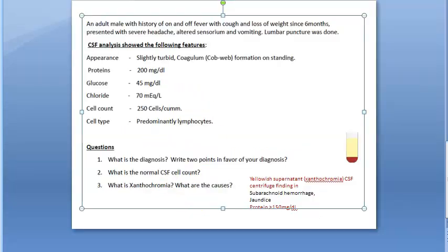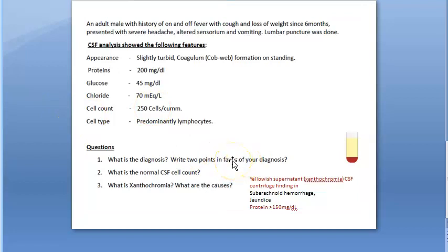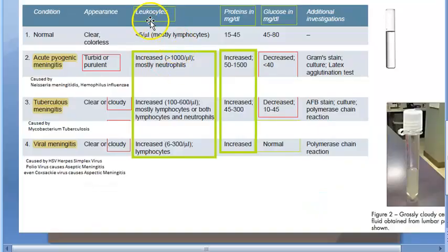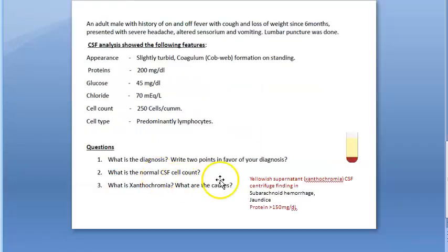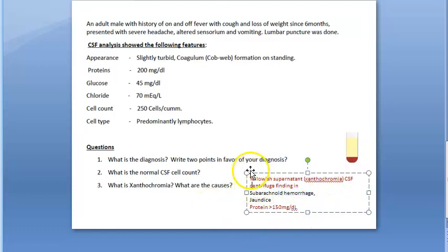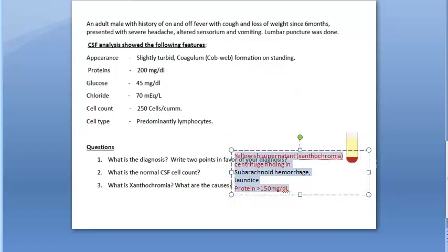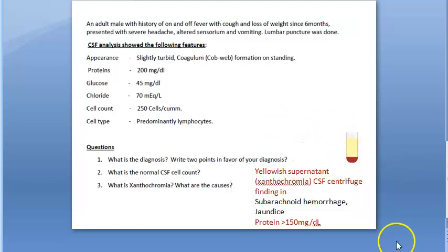To summarize: the diagnosis is tuberculosis meningitis, caused by Mycobacterium tuberculosis. Two points in favor are predominantly lymphocytes and increased proteins, with slightly turbid CSF, weight loss, and cough. Normal CSF cell count is less than five cells per microliter, mostly lymphocytes. Xanthochromia is a yellow supernatant of CSF on centrifugation, seen in subarachnoid hemorrhage, jaundice, and proteins greater than 150 mg/dL.